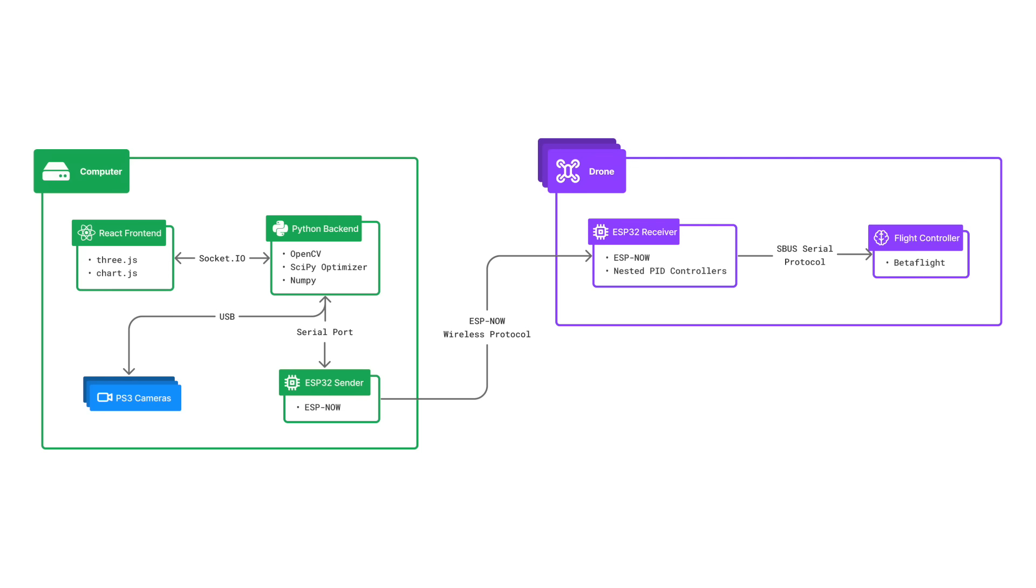Now we're going to go into a bit of a deep dive into the technical parts of this project. Here is an overall architectural diagram of the system. There are quite a few interconnected pieces, so it's honestly pretty amazing that it works at all. From a high level, the computer calculates the drone's position and transmits it to a microcontroller on the drone, which then corrects its angle accordingly.